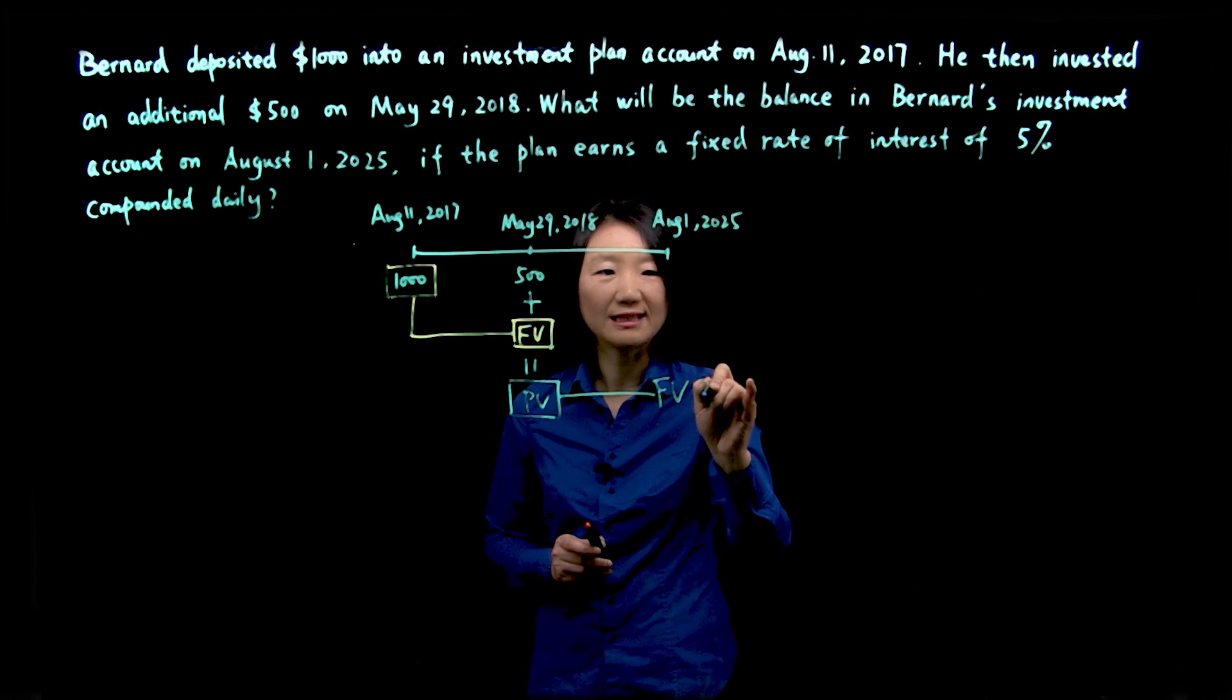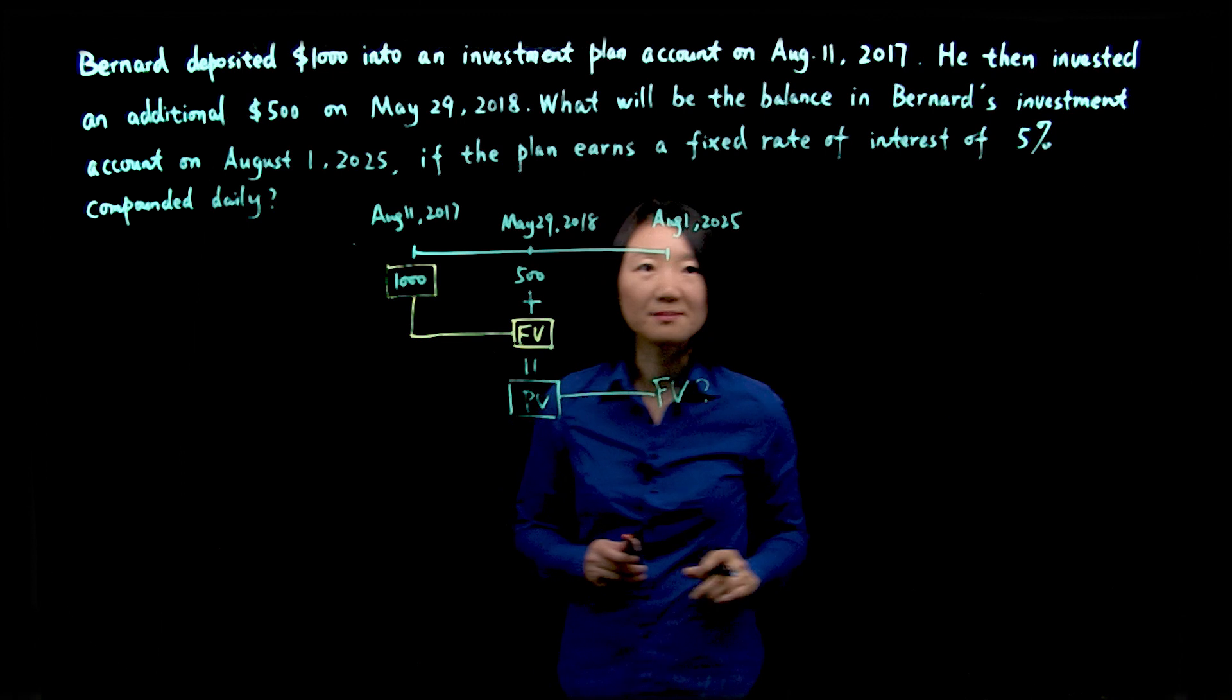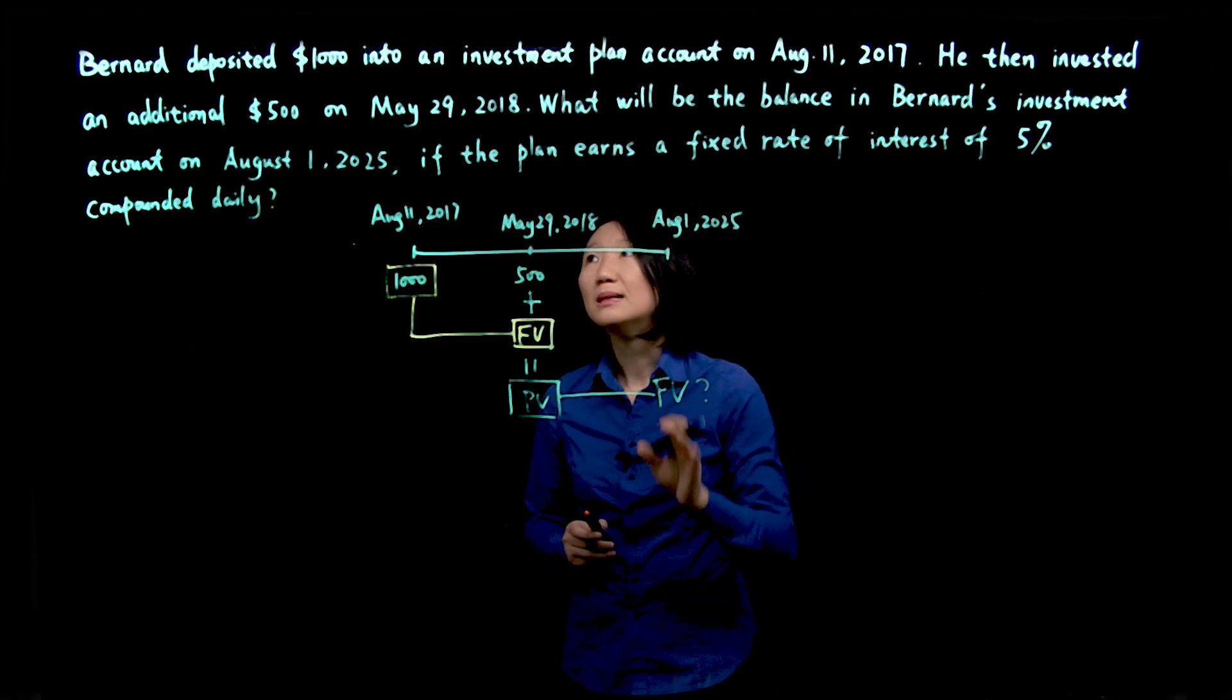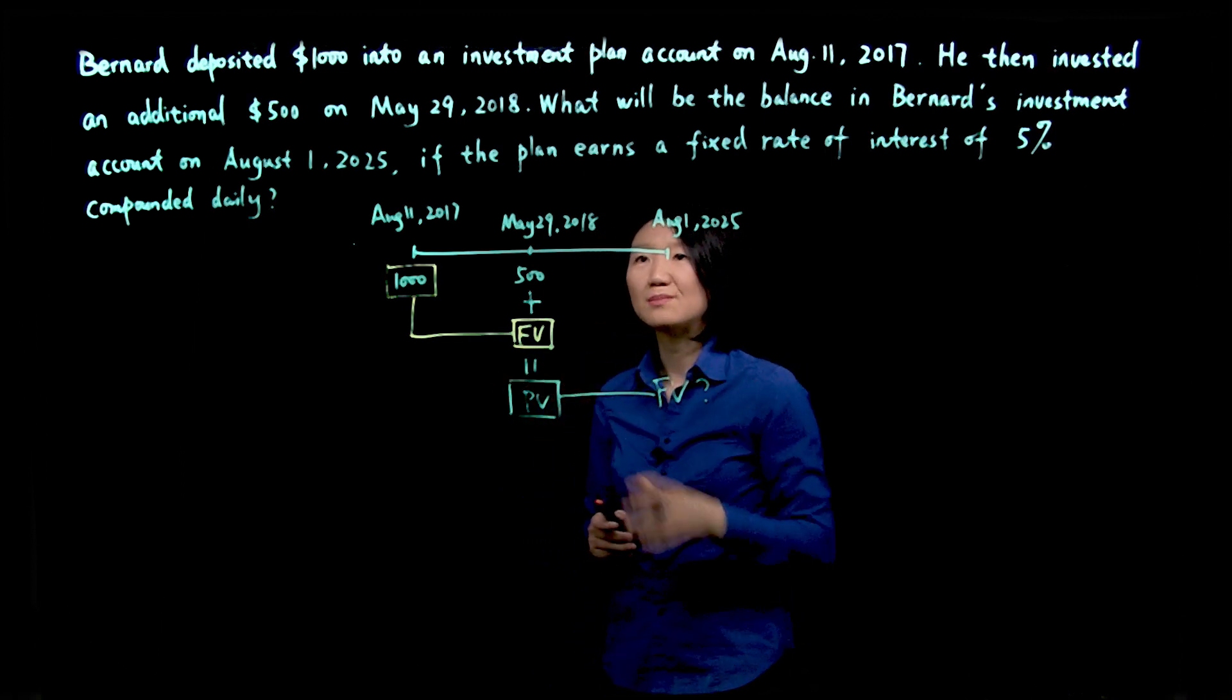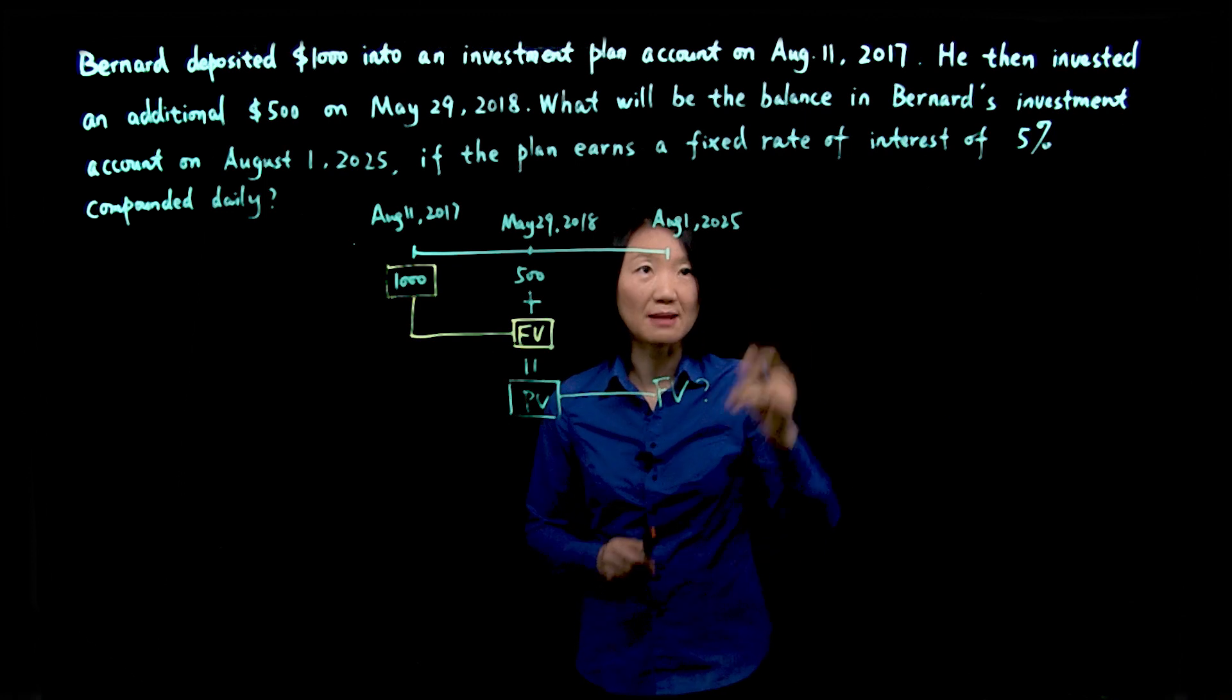And we'll be able to find out what the future value is, which is the maturity value for Bernard's investment. So we'll look at two steps for this question.